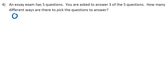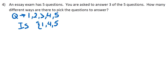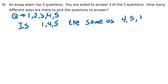In this case, our questions — I'll just call them Q — we have question one, two, three, four, five, and we have to pick three of them. When I say order matters, the question is: is picking the group one, four, and five the same as doing question one, four, and five as doing question four, five, and one? The same numbers, just in a different order. Does that matter? I would say yes, these are the same thing.